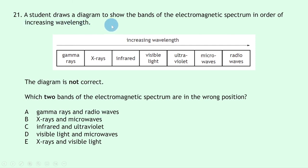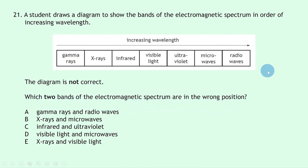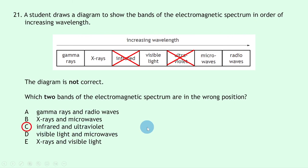Question 21: a student lists the electromagnetic spectrum in order of increasing wavelength starting with gamma rays. Using the mnemonic 'running through may bowl and vibrant underwear excites grannies,' the correct order goes radio/TV, microwave, then infrared before visible before ultraviolet. In the diagram, infrared and ultraviolet are in the wrong positions and should be swapped. The answer is C.